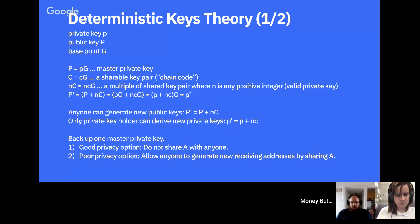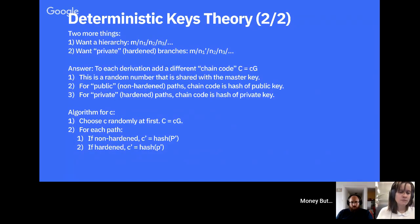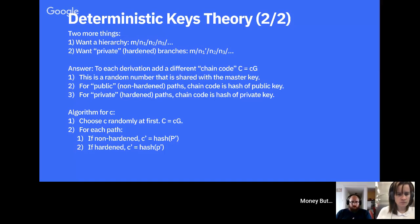We also want a hierarchy — not just a single chain code but the ability to derive keys in paths like a tree. So from a master key m, I can derive m/0, m/1, m/2, and from m/0 I can derive m/0/0, m/0/1, m/1/2, m/1/1/2, and so on. This gives us a full hierarchy of derivable keys.